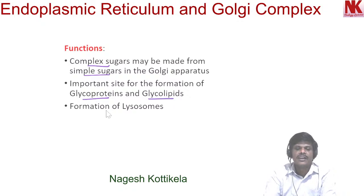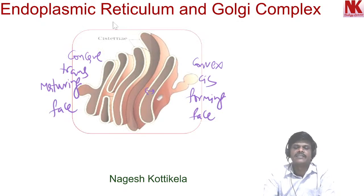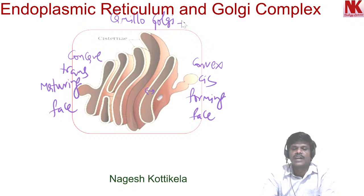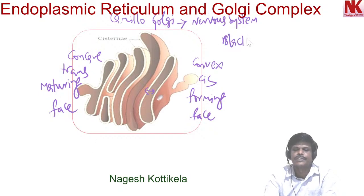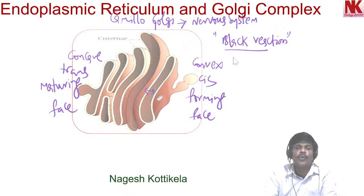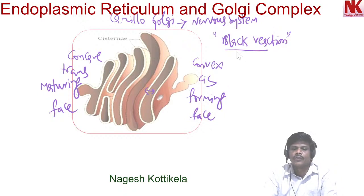Golgi apparatus also has an important role in the formation of lysosomes. The Golgi complex was discovered by Camillo Golgi, a scientist who worked on the nervous system. Camillo Golgi developed a revolutionary method of staining called the black reaction, which is useful for tracing the processes or delicate ramifications of nerve cells. For this work, Camillo Golgi received the Nobel Prize.